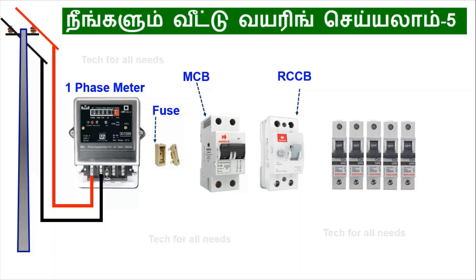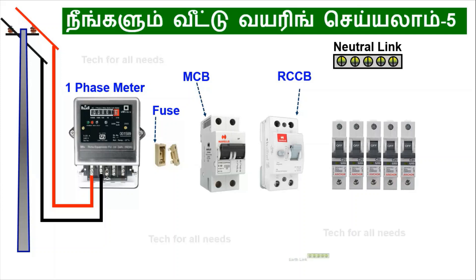For the DB box, we use the circuit. For the DB box, we select the appropriate DB box. If the DB box has a neutral link, the other connection is the earth.